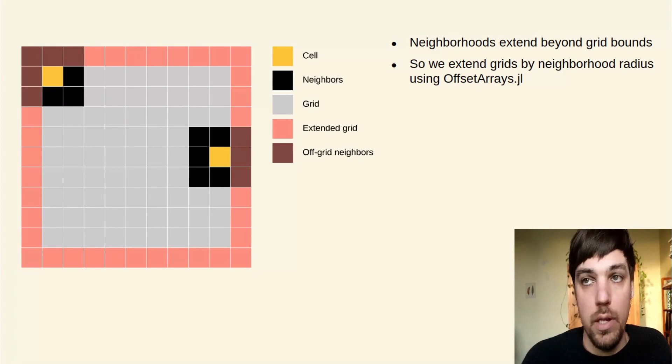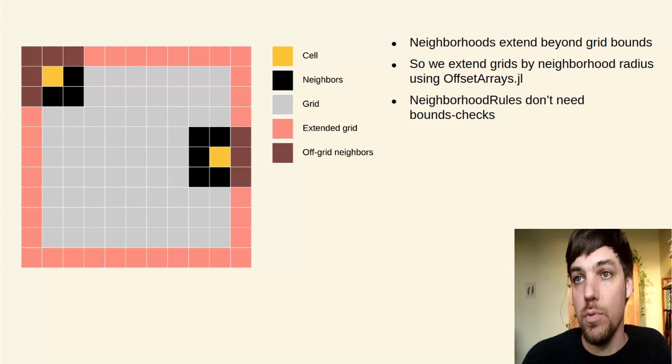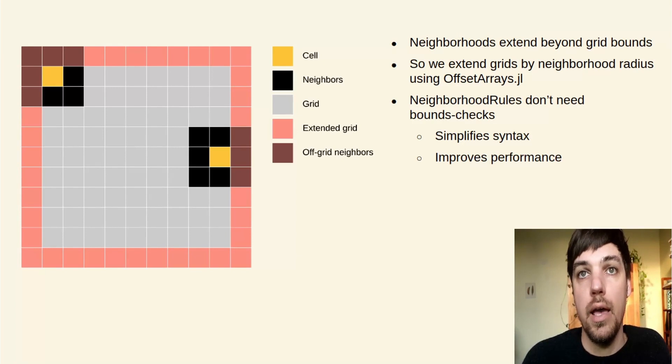To get around this, we extend grids by the neighborhood radius using offsetarrays.jl. This means neighborhood rules don't need to do any bounds checks. That simplifies syntax a lot and improves performance, not having conditionals.